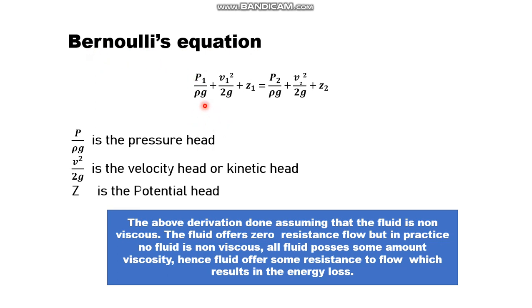The Bernoulli's equation derived in the last session is: p1/ρg + v1²/2g + z1 = p2/ρg + v2²/2g + z2. This was derived for ideal fluids — that is, non-viscous fluids where viscosity is zero. When viscosity is zero, they offer zero resistance to flow.